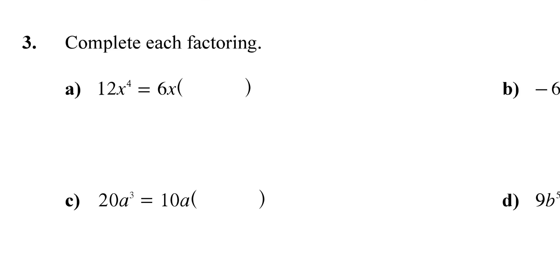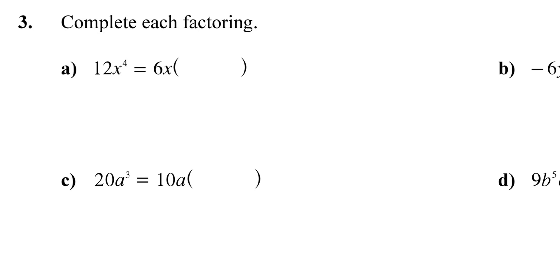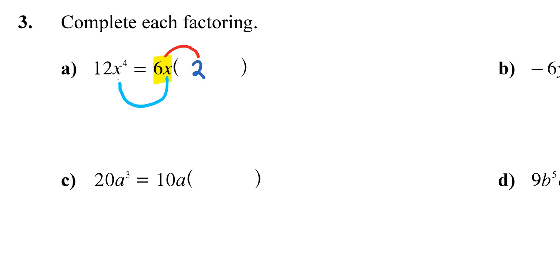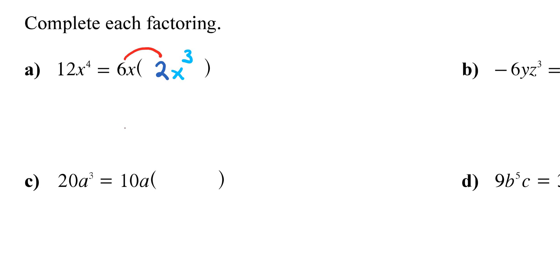Let's move on to question 3 — completing each factoring. For letter A, I have 6x and need to find what 6x times something equals 12x⁴. To get from 6 to 12, multiply by 2. To get from x to x⁴, multiply by x³. So the answer is 2x³. You can check: 6 times 2 is 12, and x times x³ is x⁴, which matches.